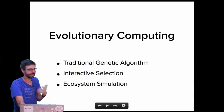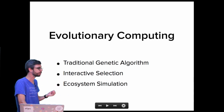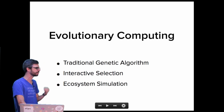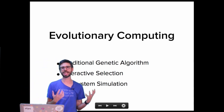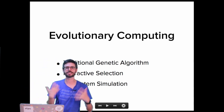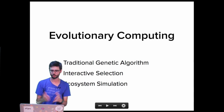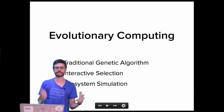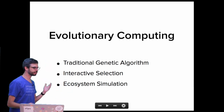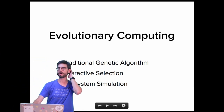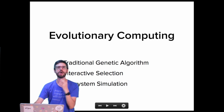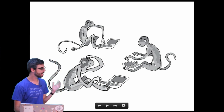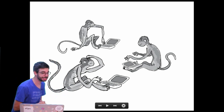Then some creative twists on this algorithm, looking at a technique called interactive selection, which allows users and audience to participate in the evolutionary process. And an ecosystem simulation, using genetics applied to agents moving around the screen in an artificial world. The video game Spore is quite famous for having things like this built in. A good way to understand why this algorithm is necessary is the Shakespearean monkey problem.